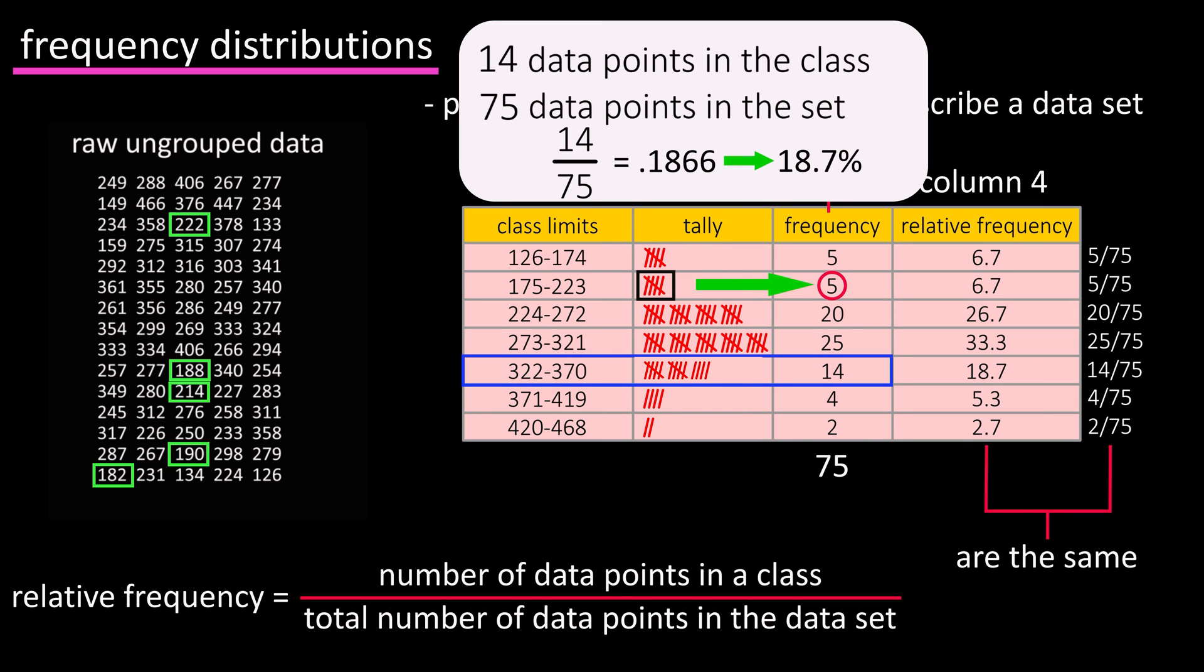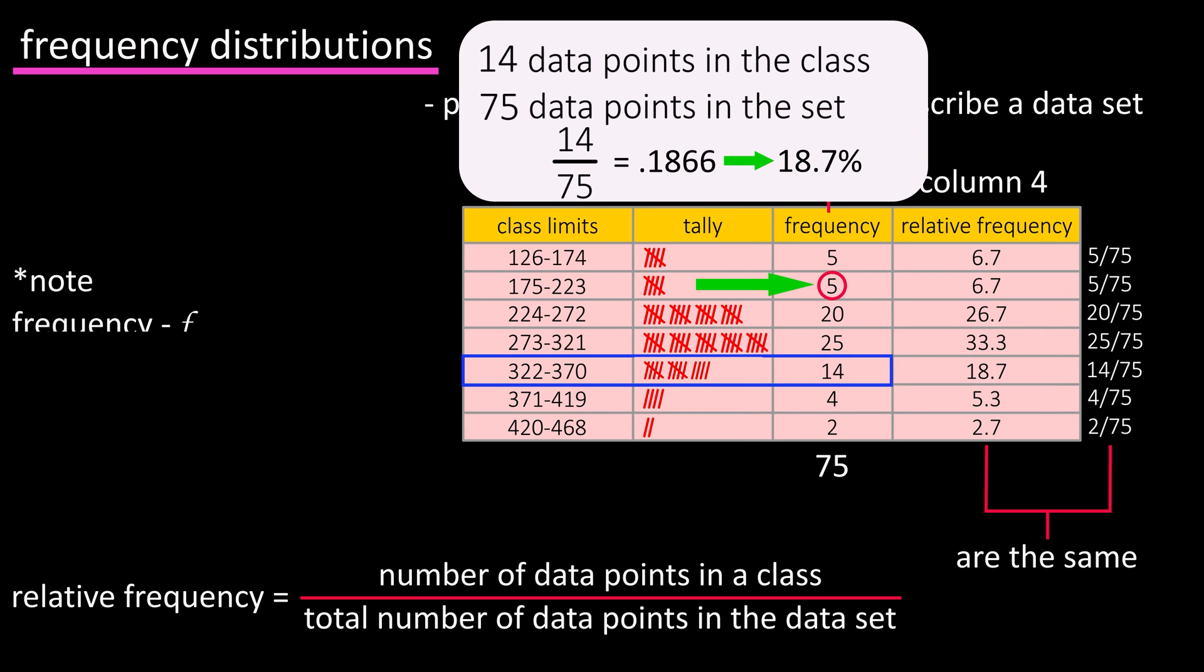So the relative frequency shows you the percentage of values that are in each class. A little note: frequency is usually noted as F, and relative frequency is usually noted as F over N, with N being the total number of data points in the data set.